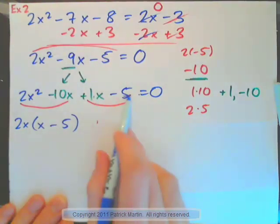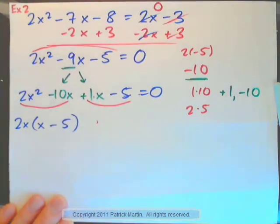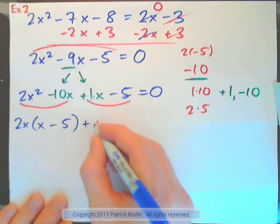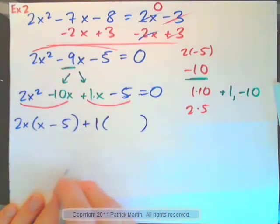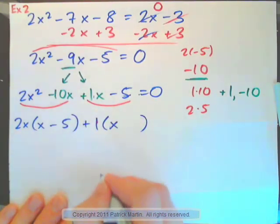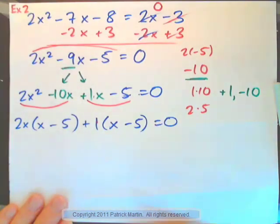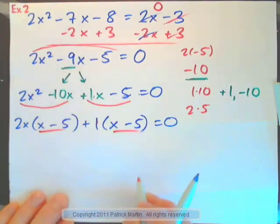How do you factor this one? 1x minus 5. What's the greatest common factor of these two terms? Well, there isn't any answer, really, apart from 1, positive 1. Because 1 times x would be 1x. 1 times negative 5 would be negative 5. And that's good because we have x minus 5 here and here.